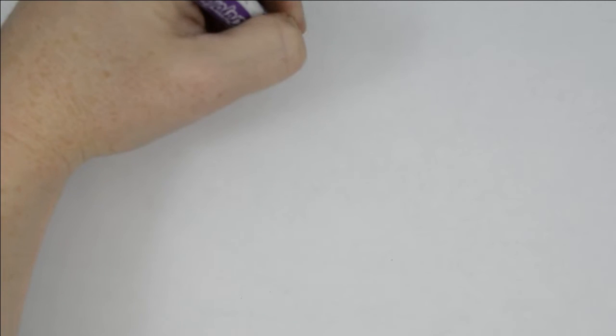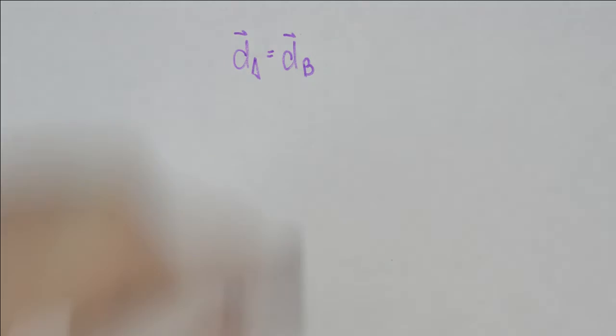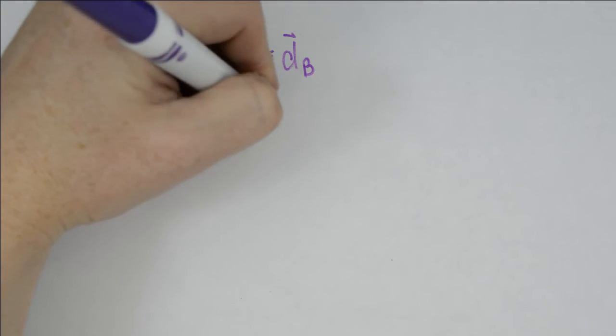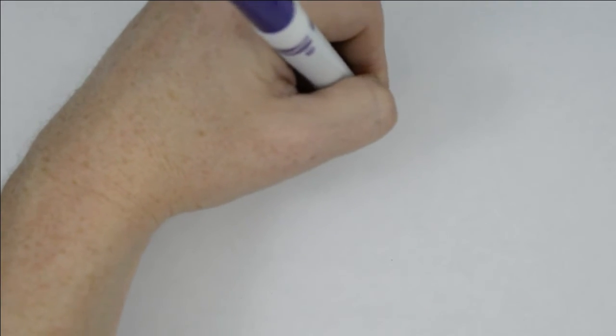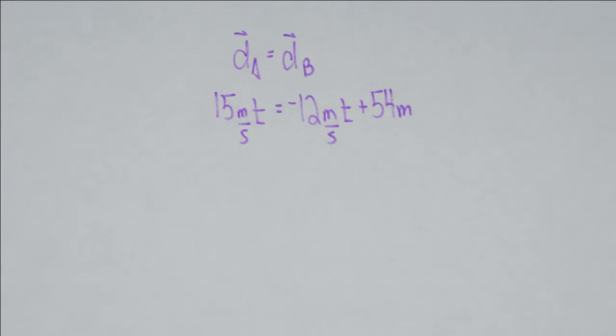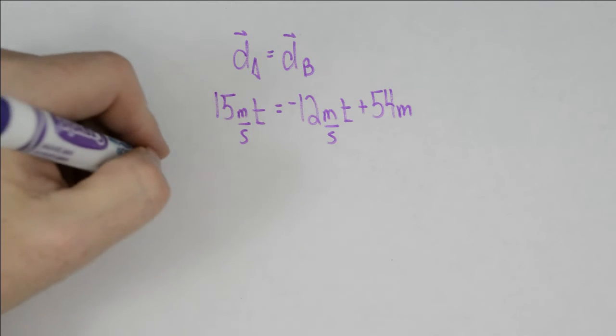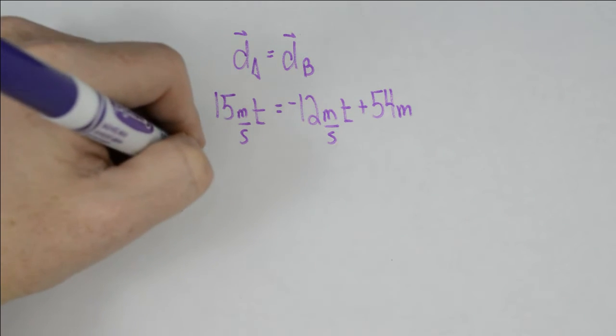In order to deal with this algebraically, what we're going to do is set those two positions equal. So we have dA is equal to dB. We write down our two equations, and so we have 15 meters per second times time equals negative 12 meters per second times time plus 54 meters.